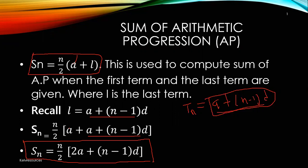You use the first formula when the first term and the last term are given. You use the second formula when the last term is not given but you have the common difference and the first term. Let's go into solutions to see what I mean.